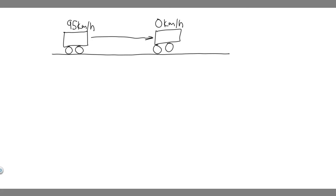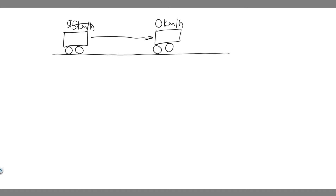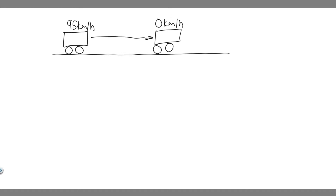In this problem we're told how many joules and kilocalories are generated when the brakes are used to bring a 1200 kilogram car to rest from a speed of 95 kilometers per hour. So the first thing you want to do is draw what's going on. We have this car going 95 kilometers per hour and it's going to slow down until it reaches zero kilometers per hour. We're trying to find how many joules and kilocalories are generated from the brakes when this happens.